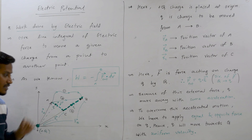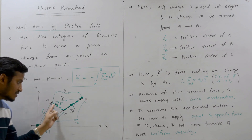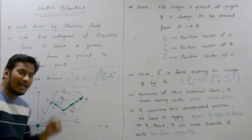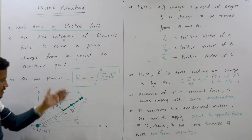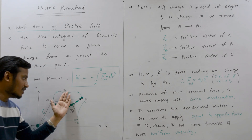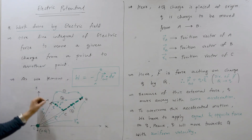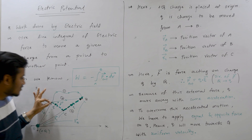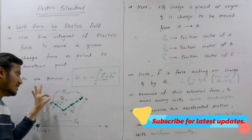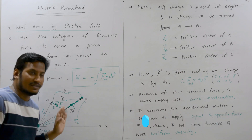We have to move this charge q from point A to point B. As you can see in this figure, we have selected multiple paths: path 1, path 2, and path 3. We can move this charge q from A to B along any of these possible paths.